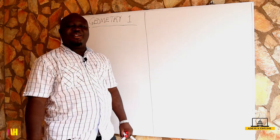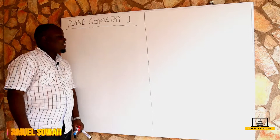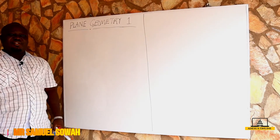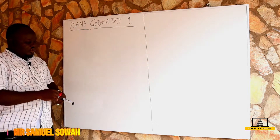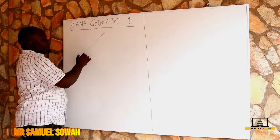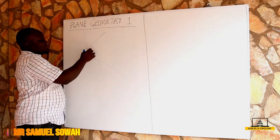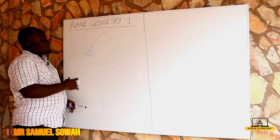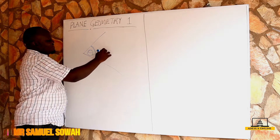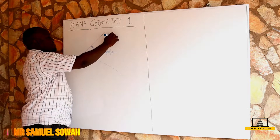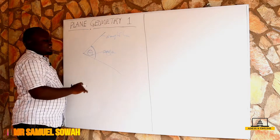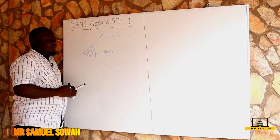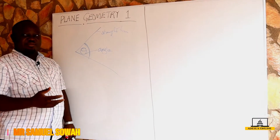Hello, my friends. Today we are starting a new topic: plane geometry one. When we talk about plane geometry one, we are going to talk about angles formed with the use of two lines. So if I have two lines which combine to form an angle theta, these two straight lines meet and form an angle. The angle formed can be calculated using a protractor.